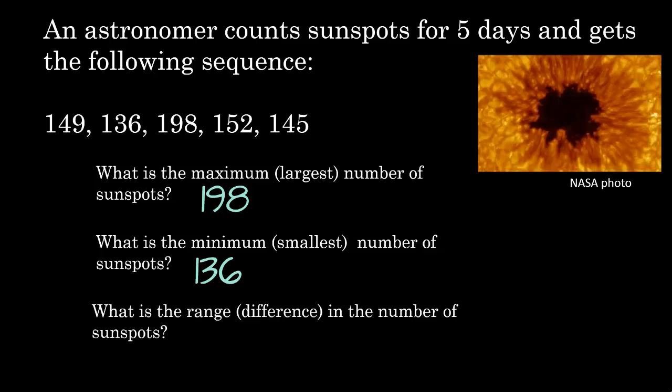What is the range or difference in the number of sunspots? Remember, difference means subtraction. So we're going to take the largest number, 198, minus the smallest number, 136, and it turns out that the range is 62.